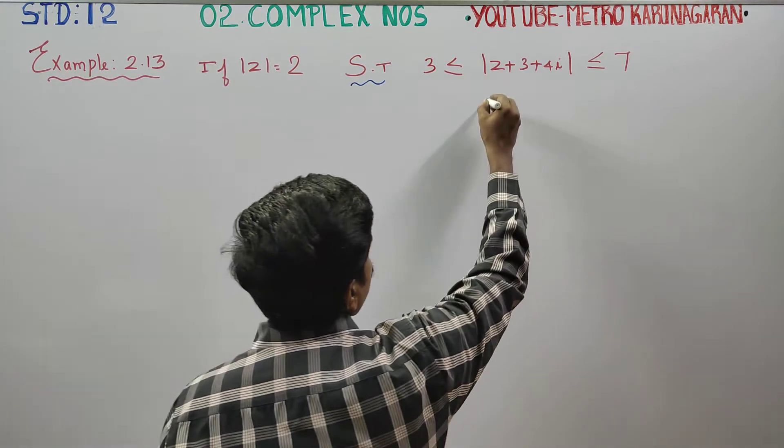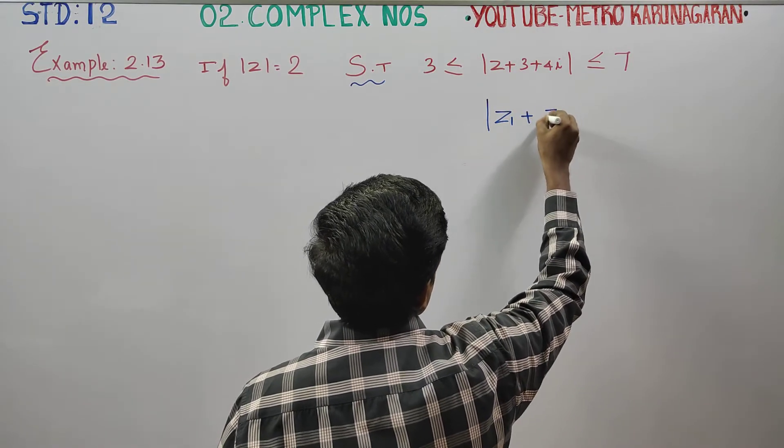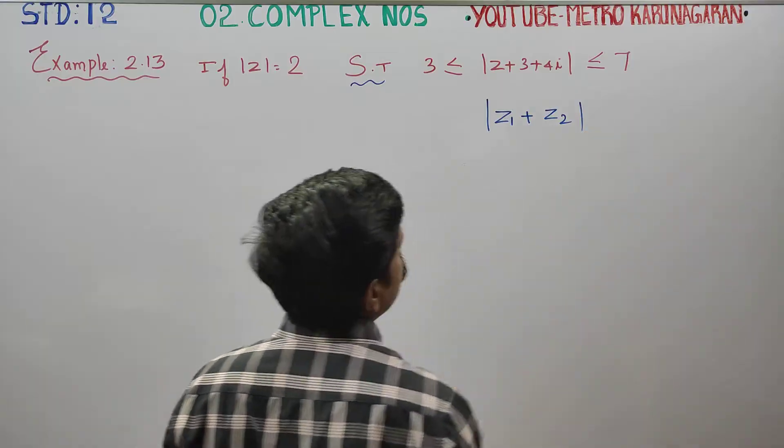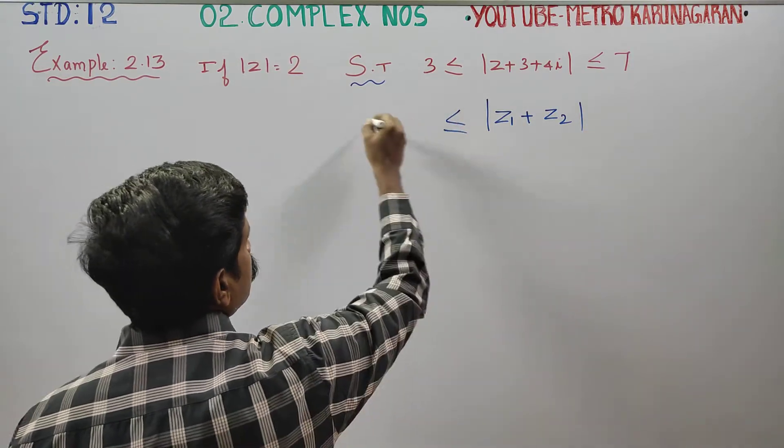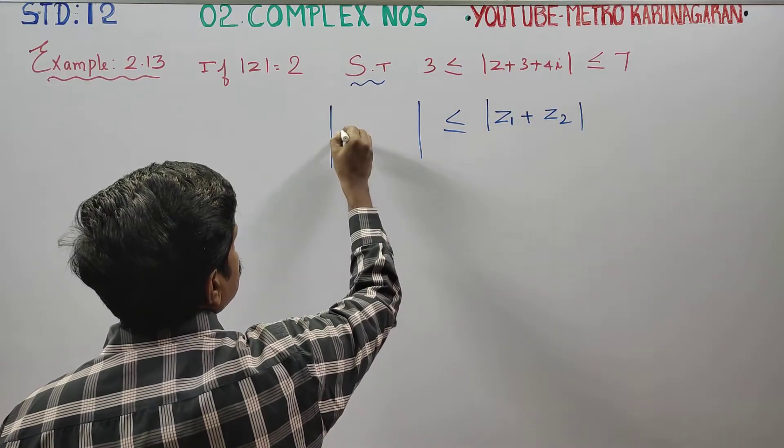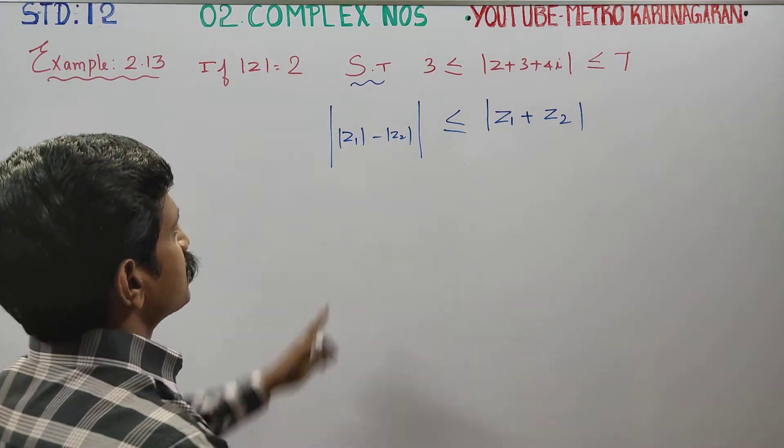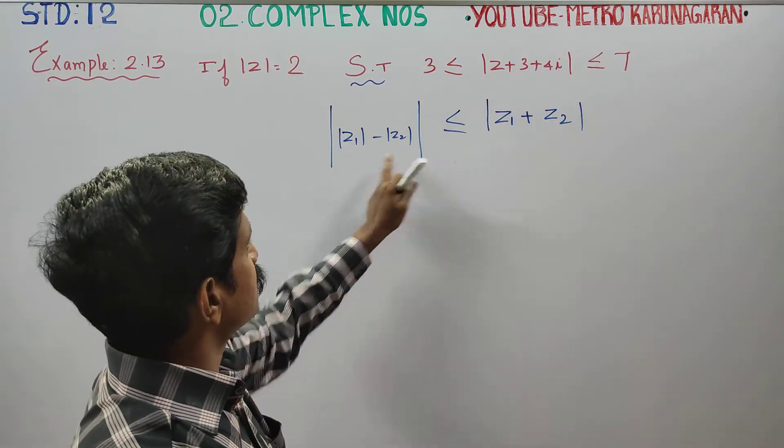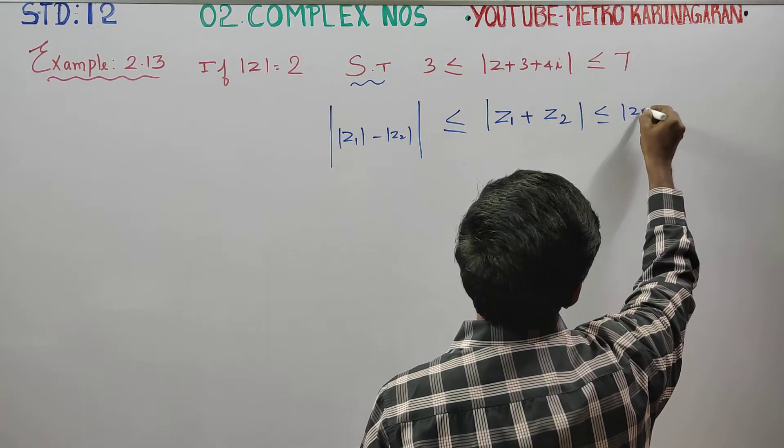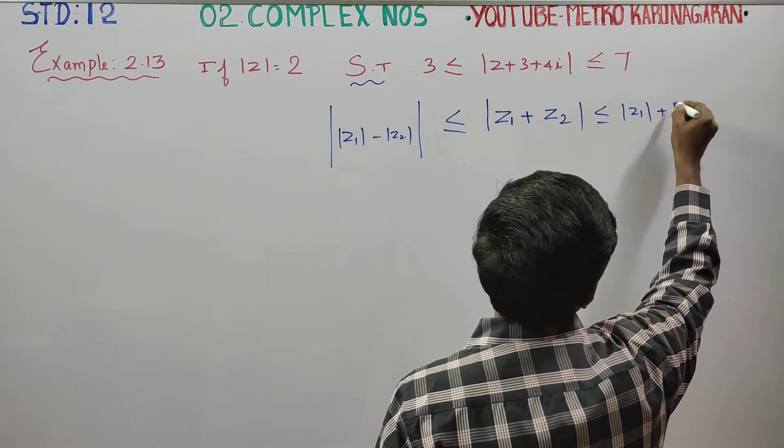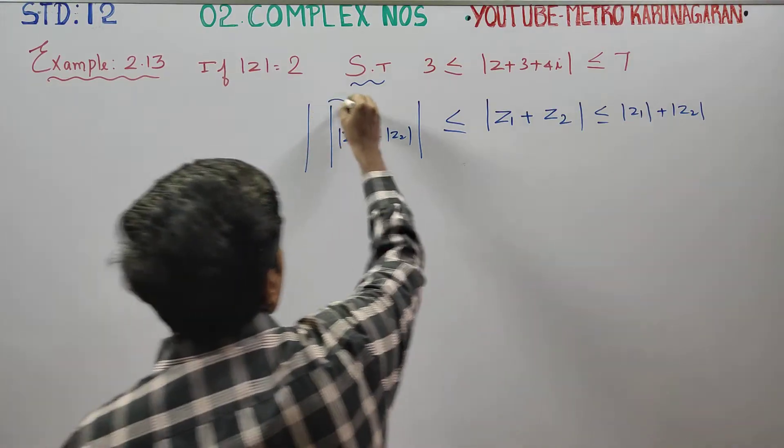For this, I am going to use a formula. The property: modulus of z1 plus z2 is less than or equal to modulus of z1 minus z2. And modulus of z1 minus modulus of z2 is less than or equal to modulus of z1 plus modulus of z2. This is a very important formula.